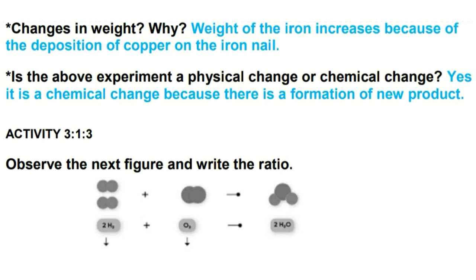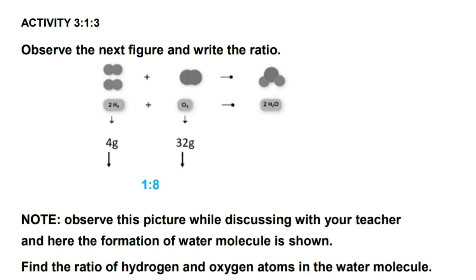Next activity: observe the figure and write the ratio. They have given hydrogen molecule and oxygen molecule and weight of it in grams. Here 4 grams of hydrogen and 32 grams of oxygen. Now to write the ratio, we can write it like 4 is to 32, but we can simplify again: 4 1s are 4, 4 8s are 32, so the ratio of molecules in water is 1 is to 8, that is 1 hydrogen and 8 oxygen.